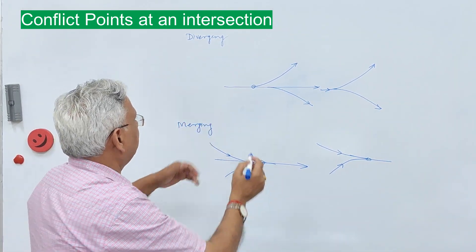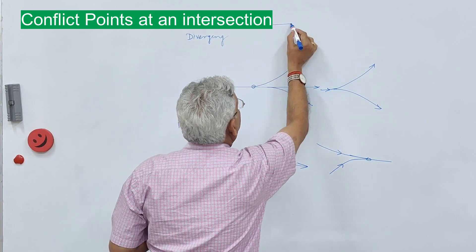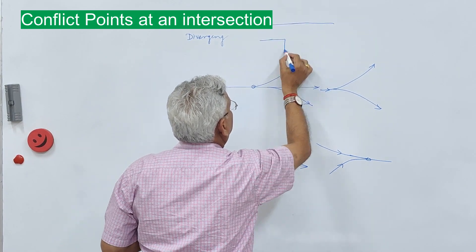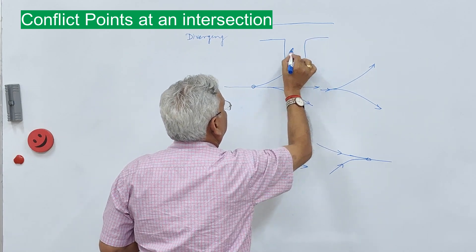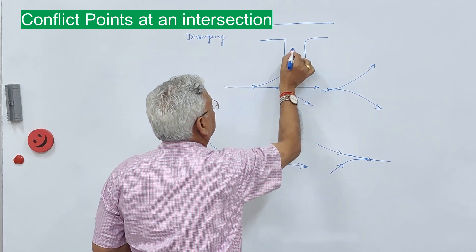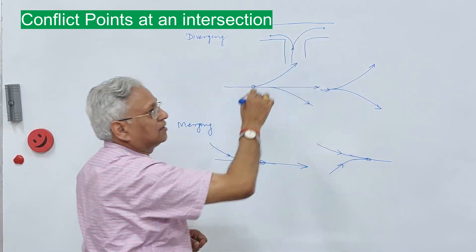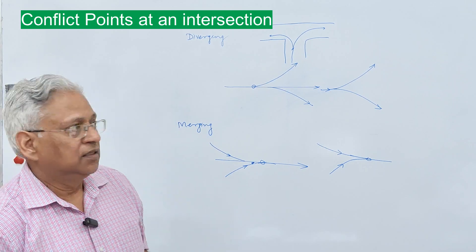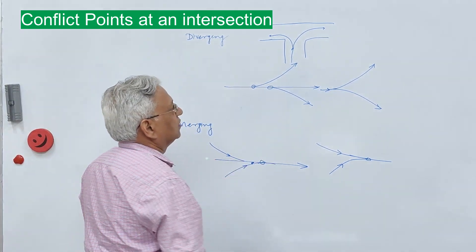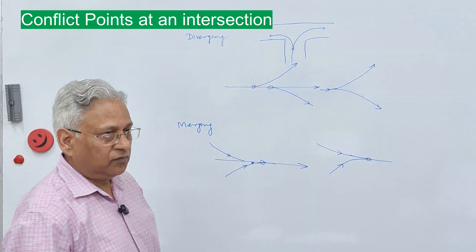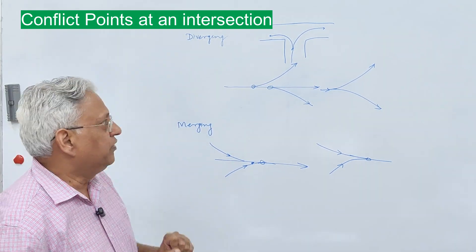The diverging can be to the left side, to the right side, or in different directions from the same stream — that is mutual diverging. For example, at a T-intersection, a vehicle approaching from one direction will either go to one side or the other. That is mutual diverging, and that is the point of conflict.